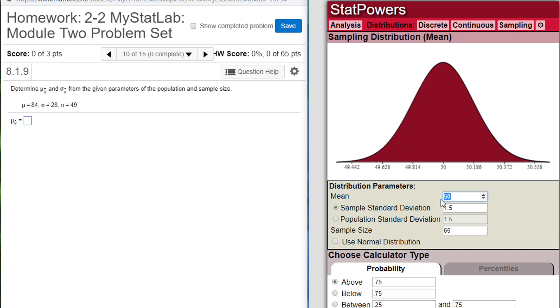and then we're just going to put in what's the mean. We're told 84 is the mean. We have the population standard deviation is 28, and we're told the sample size is 49.